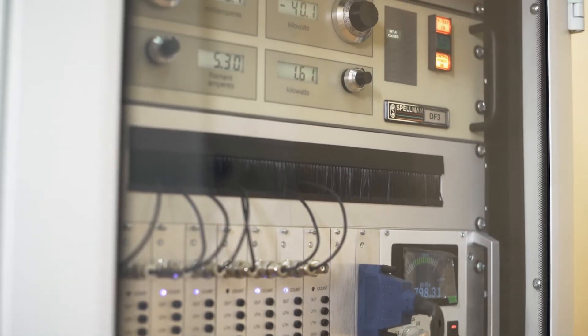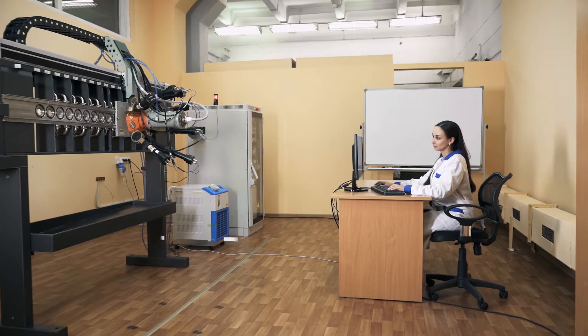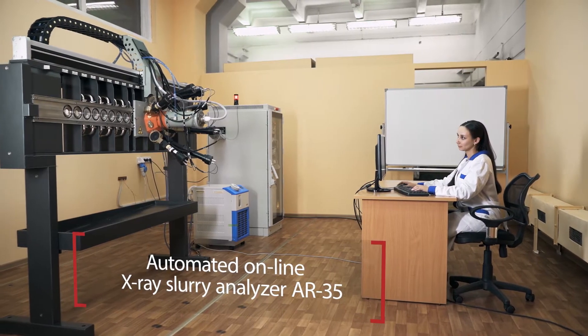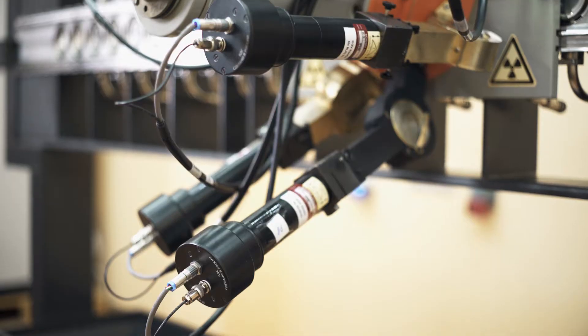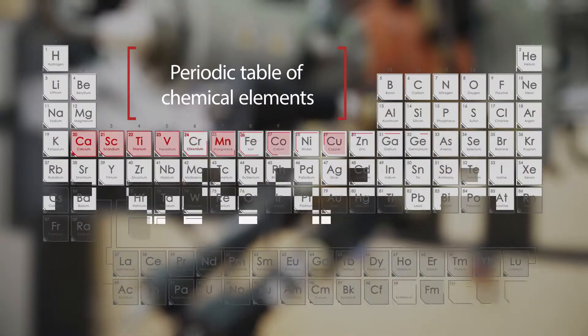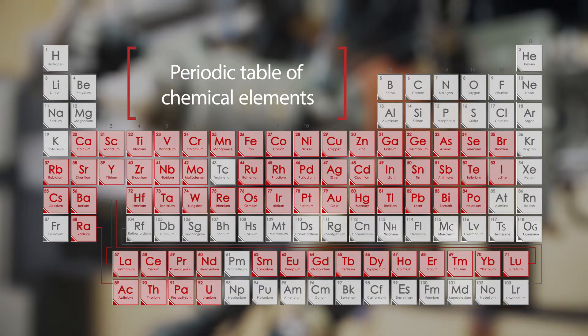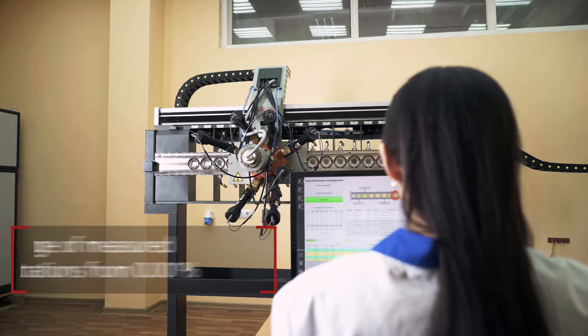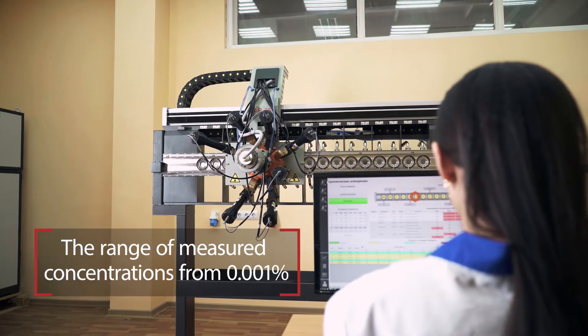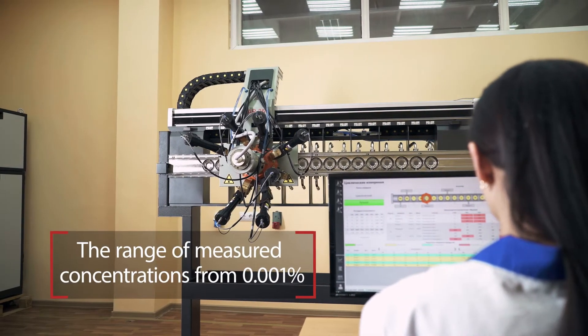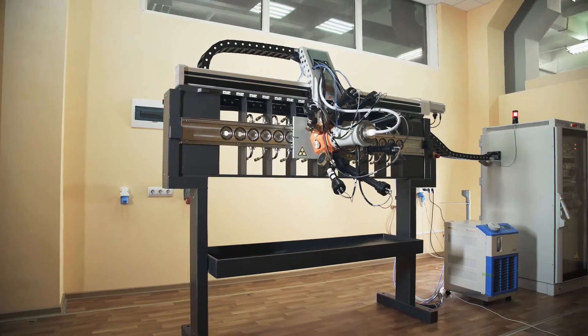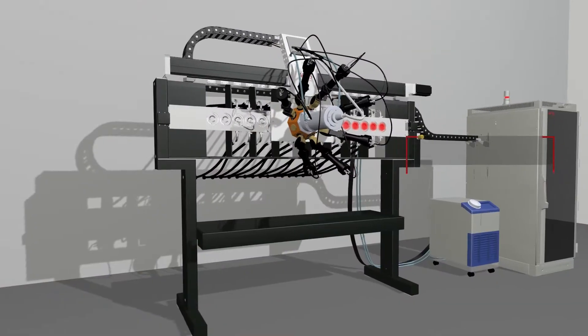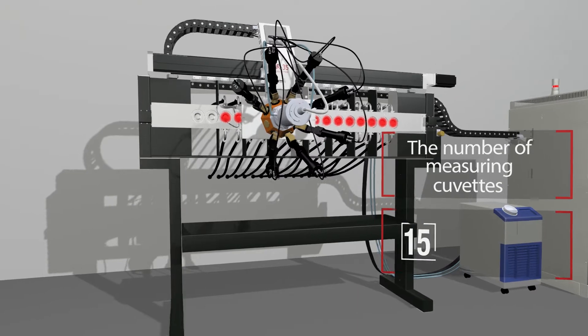The x-ray fluorescence on-stream analyzer AR-35 has been developed for continuous analysis of pulp and slurry flows over a range of determined chemical elements from calcium to uranium. The AR-35 can analyze up to seven elements per flow stream simultaneously for concentrations of 0.001 percent and up. The basic configuration contains 15 flow cells, but this number can be reduced to ten or six streams on the customer's request.